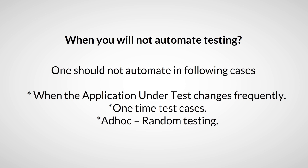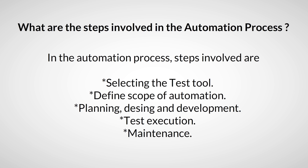What are the steps involved in the automation process? The steps involved are: first, selecting the test tool; second, defining the scope of automation; third, planning, designing and development; fourth, test execution; and fifth, maintenance.